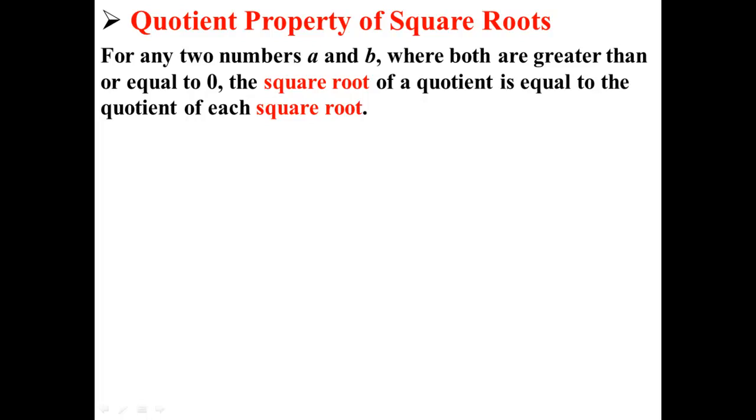According to the quotient property of square roots, for any two numbers a and b where both numbers are greater than or equal to zero, the square root of a quotient is equal to the quotient of each square root.